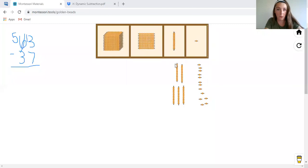And this three became a 13 because we added 10. So now we can take seven from 13. So what we're going to do is we're just going to go ahead and put seven back because we're taking them away, all the way away.